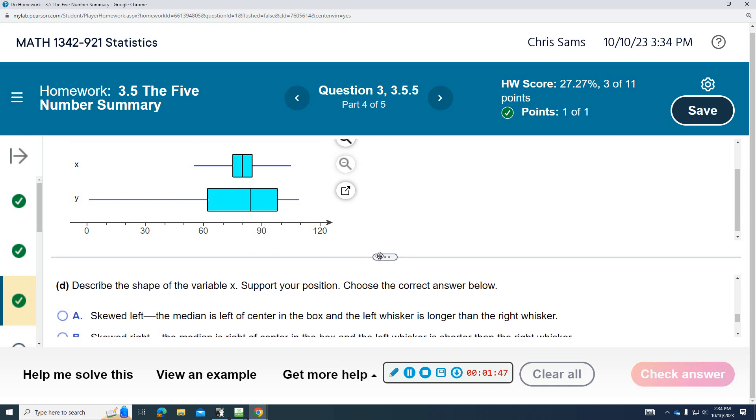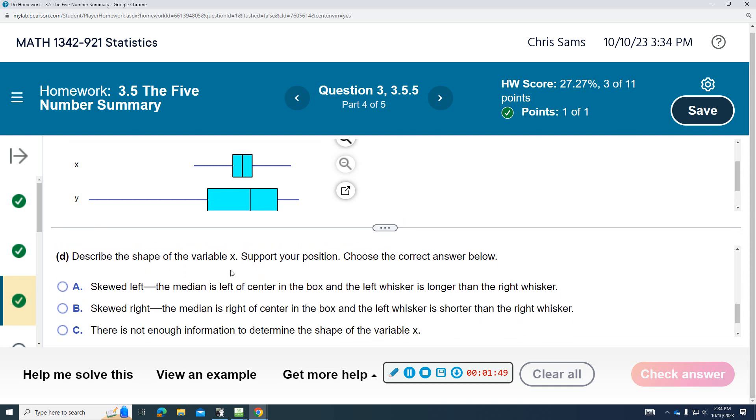And then D, describe the shape of X. So X, if I look at how far the whiskers are from each quartile, it looks very much the same. And each division of the quartiles even looks the same. These boxes look to be about the same width. So X looks like it has a symmetric distribution.